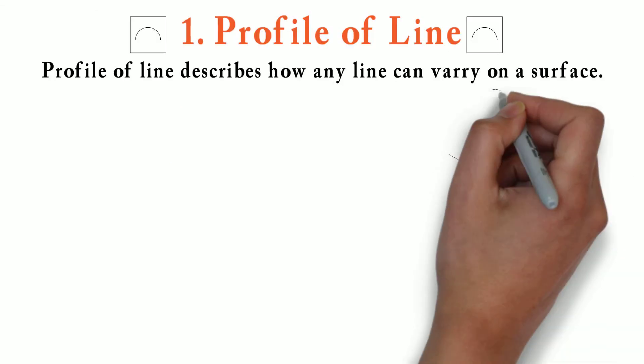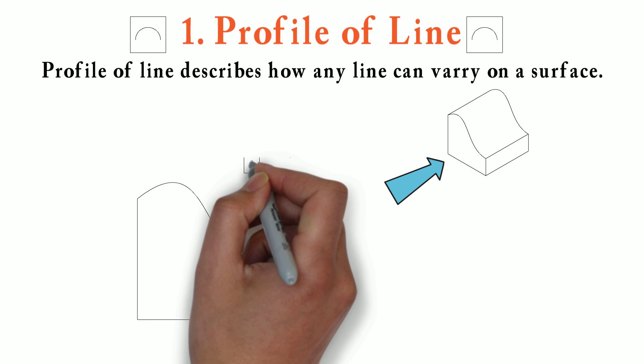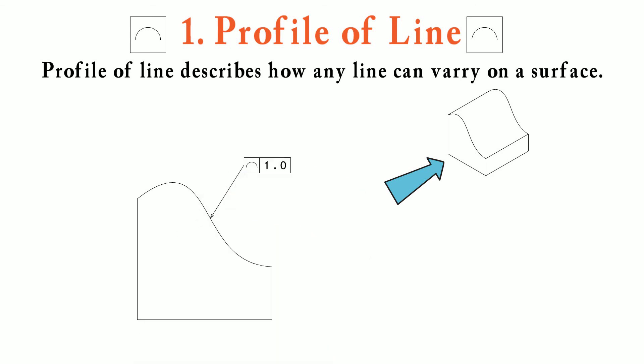Let's see with an example. Consider a block like this. Now we will give a profile of line tolerance of 1mm to this profile. We will call out this tolerance with a simple arrow leading towards the surface which we want to control. Here, 1mm tolerance to this profile means if we draw two parallel profiles 1mm apart to this original profile, then when actually produced, it should lie in between these two profiles. This is the profile which needs to be controlled and should be in between these two red lines.